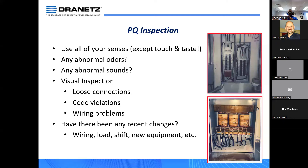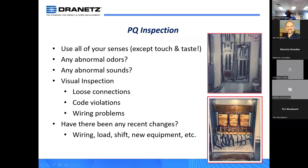For the inspection, use all your senses but don't touch. Look for abnormal odors, abnormal sounds, and do a visual inspection. Loose connections are notorious, and code violations are also notorious — for example, illegal loops to the ground bonds can cause havoc, and ground loops. What I've seen particularly with a new facility experiencing PQ problems is that the visual inspection usually reveals where the problem is. It's not necessarily something failing — it's the loose connections, code violations, wiring problems, and miswiring. With new installations or retrofits, pay particular attention to the visual inspection stage.